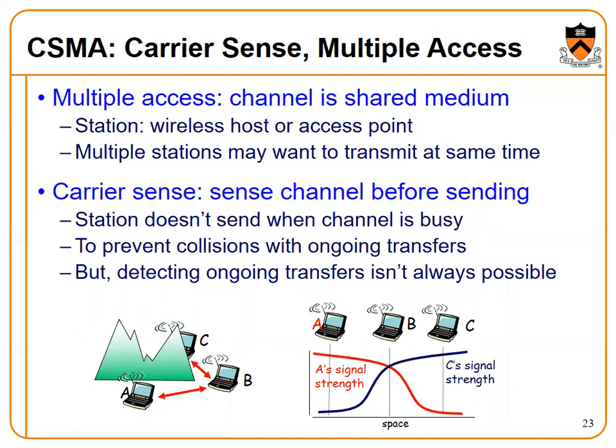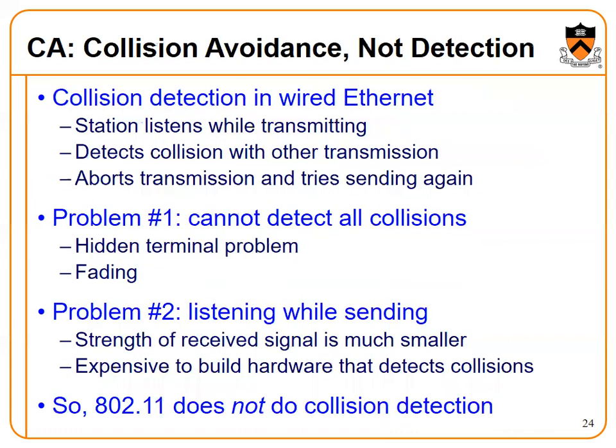CSMA — Carrier Sense Multiple Access — uses a shared medium channel with stations such as wireless hosts or access points. Multiple stations may want to transmit at the same time. A station senses the channel before sending and does not send when the channel is busy, to prevent collision during an ongoing transfer. However, detecting an ongoing transfer is not always possible.